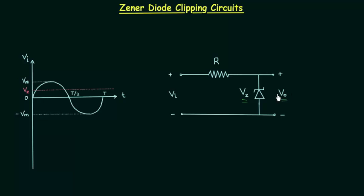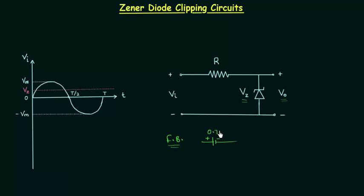I will calculate the output voltage for the first half cycle from 0 to t/2. But first I will revise the equivalent models for the zener diode. When the zener diode is forward biased, the equivalent model is similar to the normal diode — a 0.7V drop for a silicon zener diode — and I am considering the constant voltage drop model.